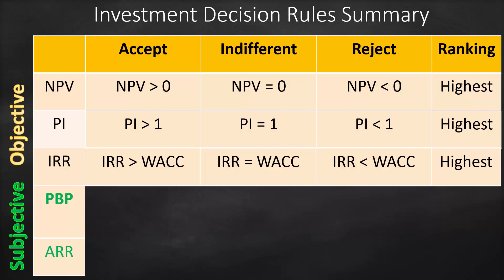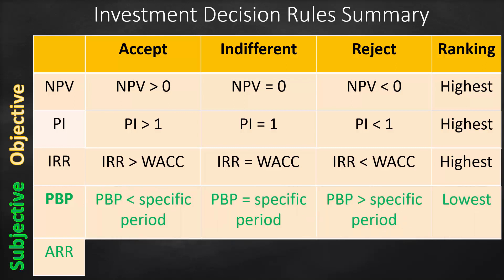Payback period is considered a subjective measure because we compare it with a specific period that differs from one investor to another. For example, if I ask Jennifer when she would like her money back, she says six months. Mark says two years. Amanda says five years. Therefore, there is no objective benchmark, and that is why we call it a subjective measure.